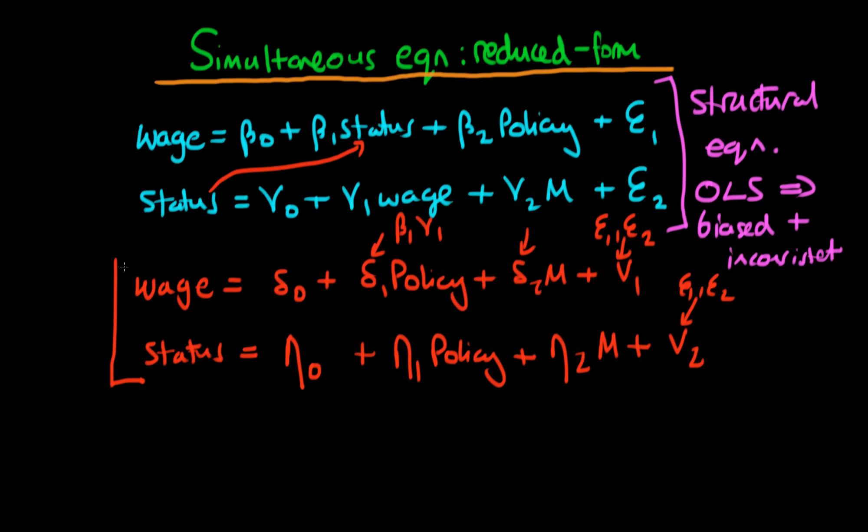And these two equations taken together are what we refer to as the reduced form representation of simultaneous equation models. It's reduced form because these equations don't really tell us anything economically. They're just the results of us rearranging two economic relationships. And because of that we've kind of lost something. We've lost the economics of the situation.